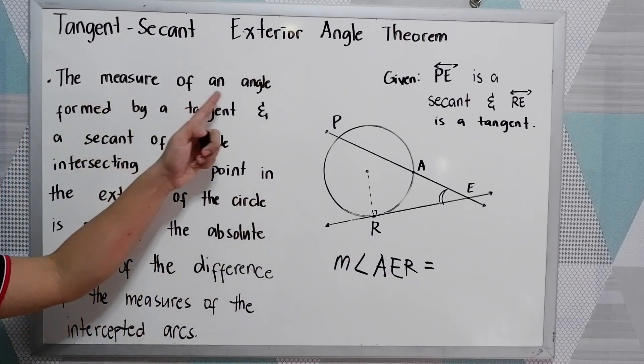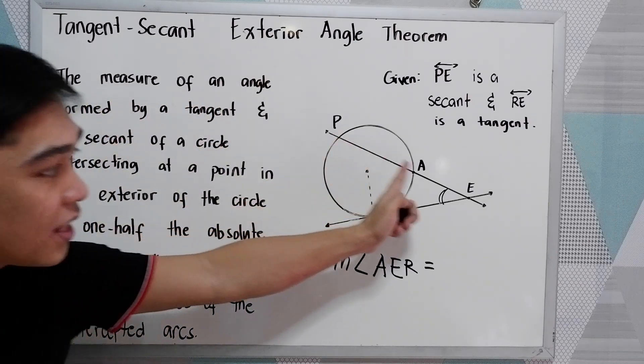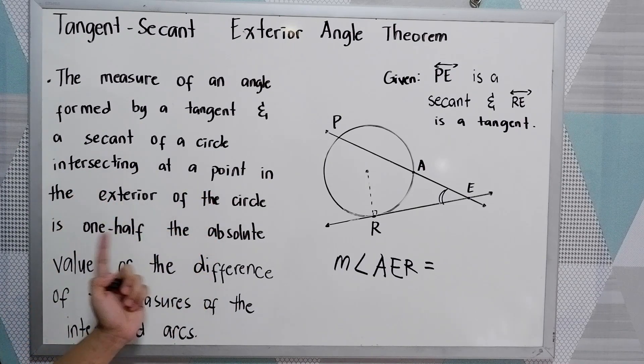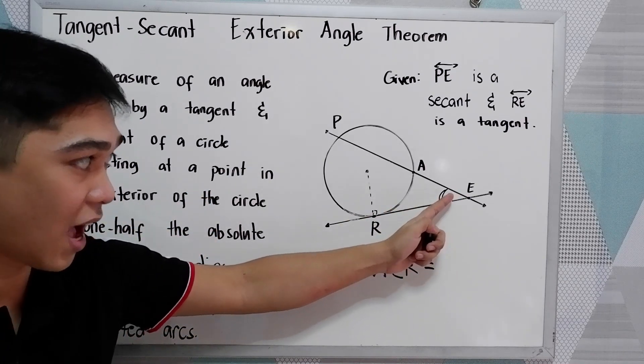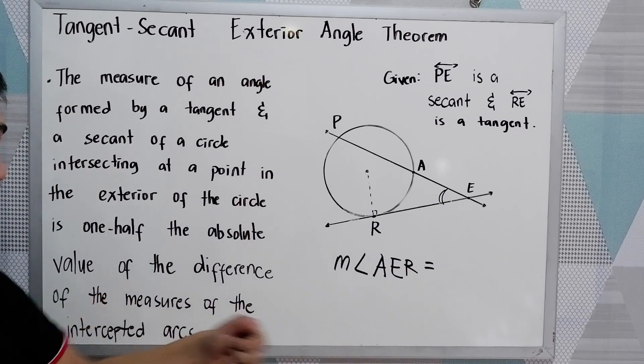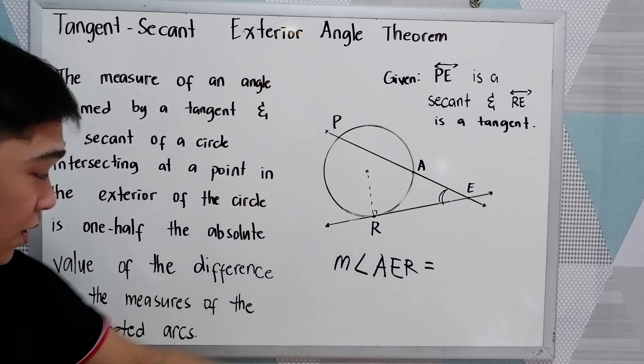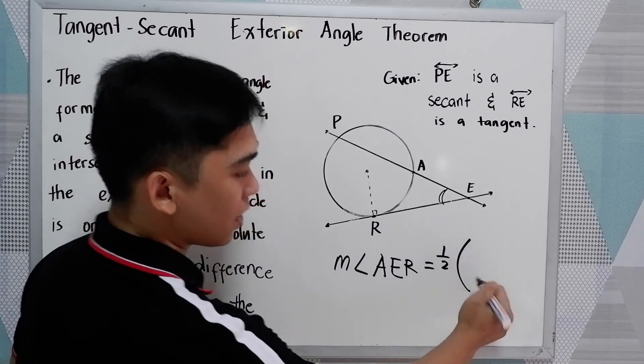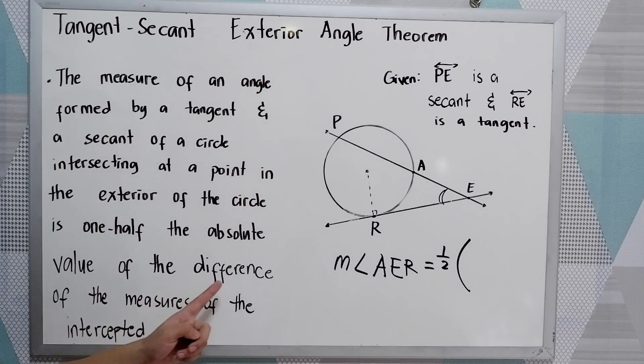So the measure of the angle formed by a tangent and a secant intersecting at a point in the exterior of the circle. So this is the angle, measure of angle AER equals one-half the absolute value of the difference of the measures of the intercepted arcs.